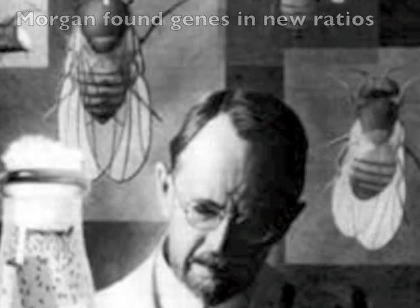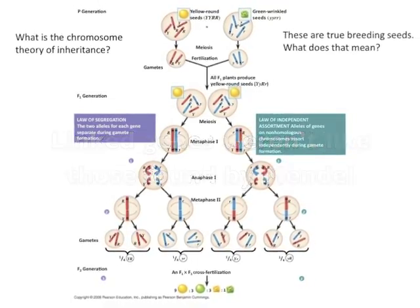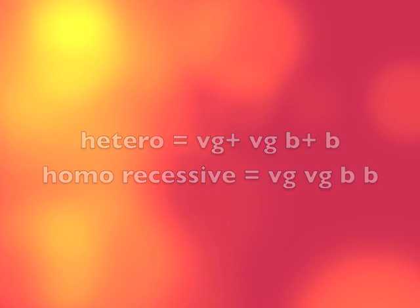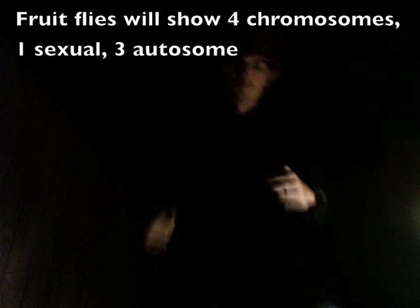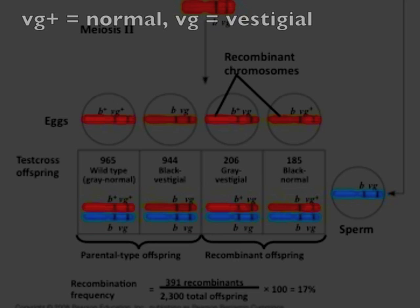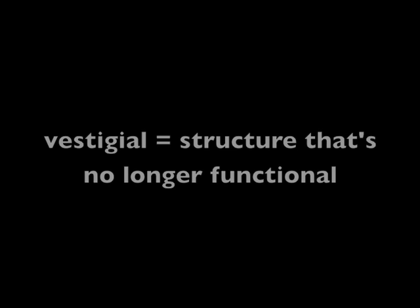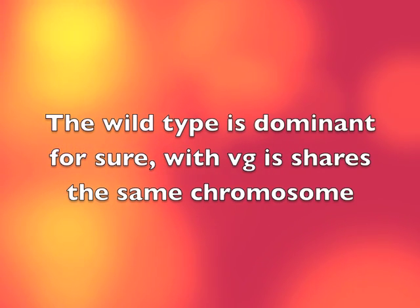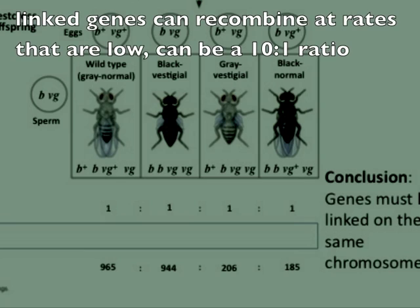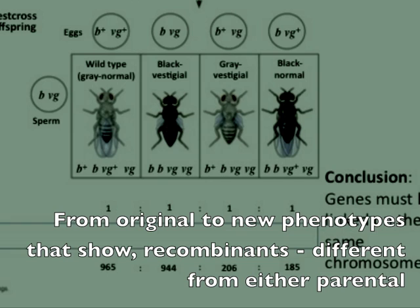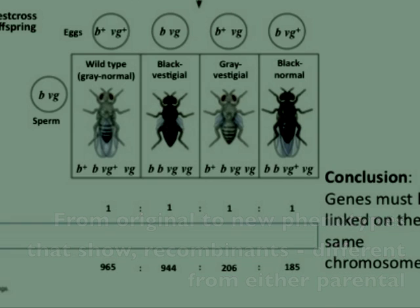Morgan found genes with new ratios. Linked genes were like those found on autosomes — expected a one-to-one-to-one ratio with a hetero and a homo. Fruit flies show four chromosomes: one is sex-linked, three are autosomal. The plus allele is dominant. VG+ means normal; VG is vestigial. The wild type is dominant for sure, and shares the same chromosome. Linked genes recombine at rates that are low — can be more like a 10-to-1 ratio — from original to new phenotype, recombinants different from either parental.